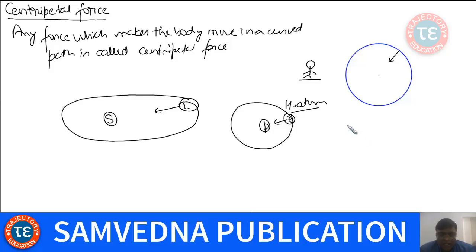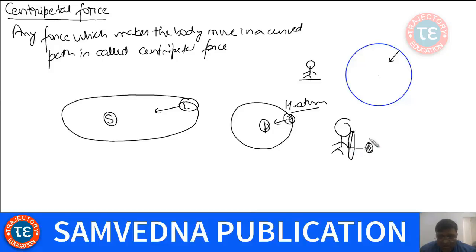Suppose a person is holding a string with a stone tied at one end. He starts rotating his hand and the stone undergoes circular motion. Which force is making the stone move in a curved path? It is the tension in the string. So here, tension in the string is the Centripetal Force. Given the circumstances, I can make any force a Centripetal Force.